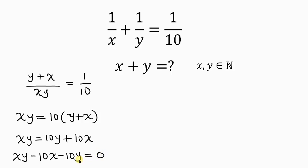Our next step is to add a term to both sides so that the left hand side can be factorized. The term we are going to add is 10 times 10, which is 100. So let's add 100 to both sides.